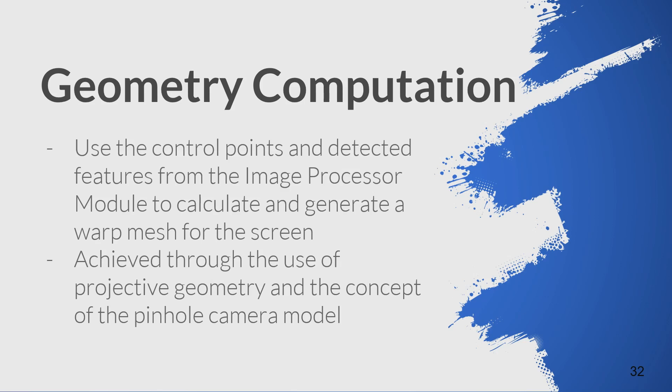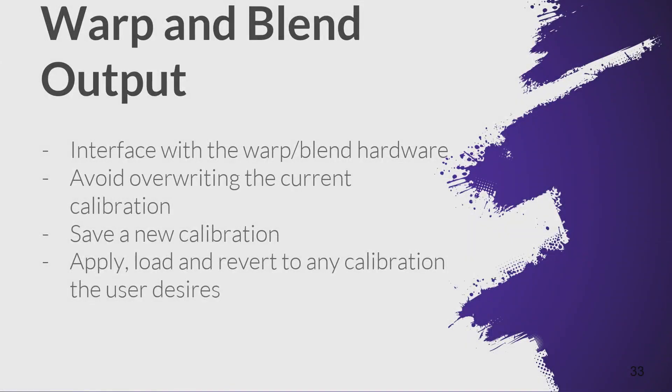The warp mesh is achieved through the use of projective geometry and the concept of a pinhole camera model. Warp and blend output is the stage where we calculate what should be sent to the warp blend units, which pre-distort the images before they're sent to the projectors. Some projectors have the warp blend unit built in; sometimes it's an external device. This module interfaces with the warp blend hardware, avoids overriding the current calibration without saving it, and handles saving, applying, loading, and reverting to any other calibration.